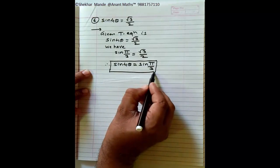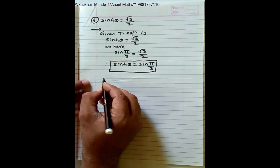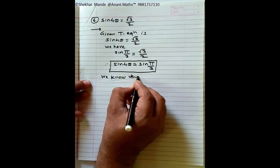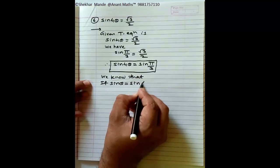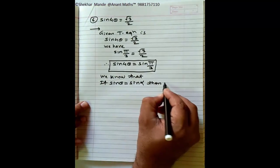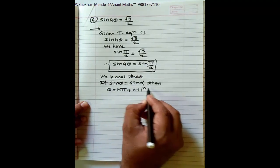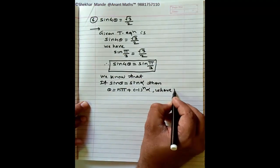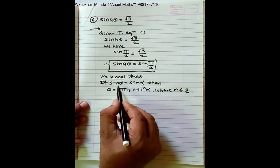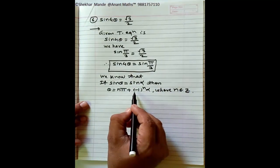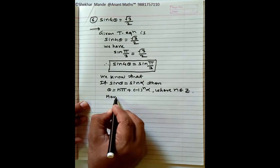We know sin(π/3) = √3/2, so sin 4θ = sin(π/3). This is in the form sin θ = sin α, where the angle is 4θ and α = π/3. Applying the general solution formula: if sin θ = sin α then θ = nπ + (−1)^n · α. Here 4θ = nπ + (−1)^n · (π/3), where n belongs to Z.